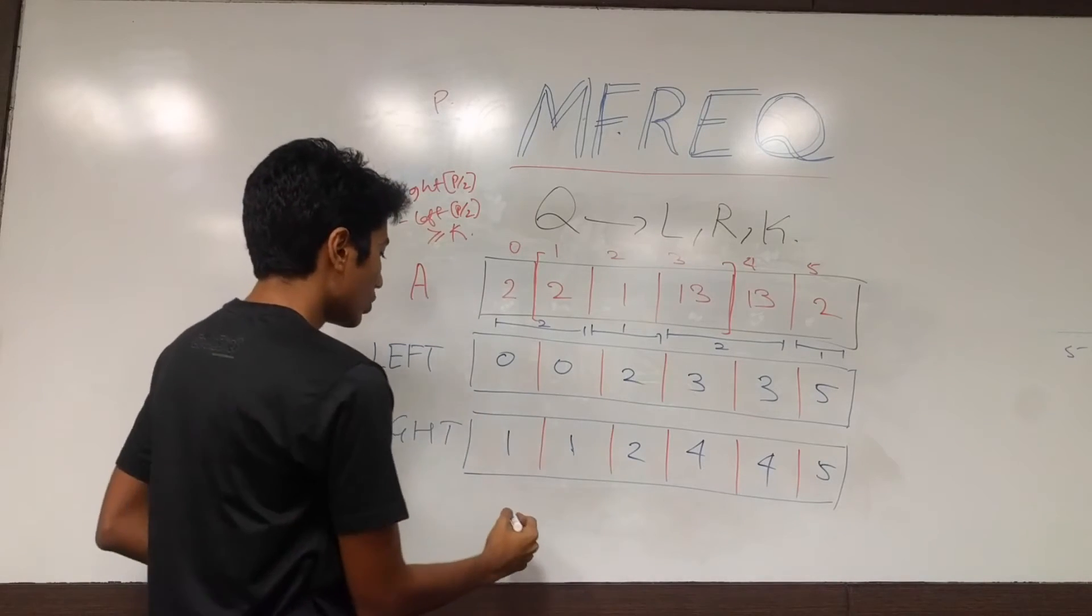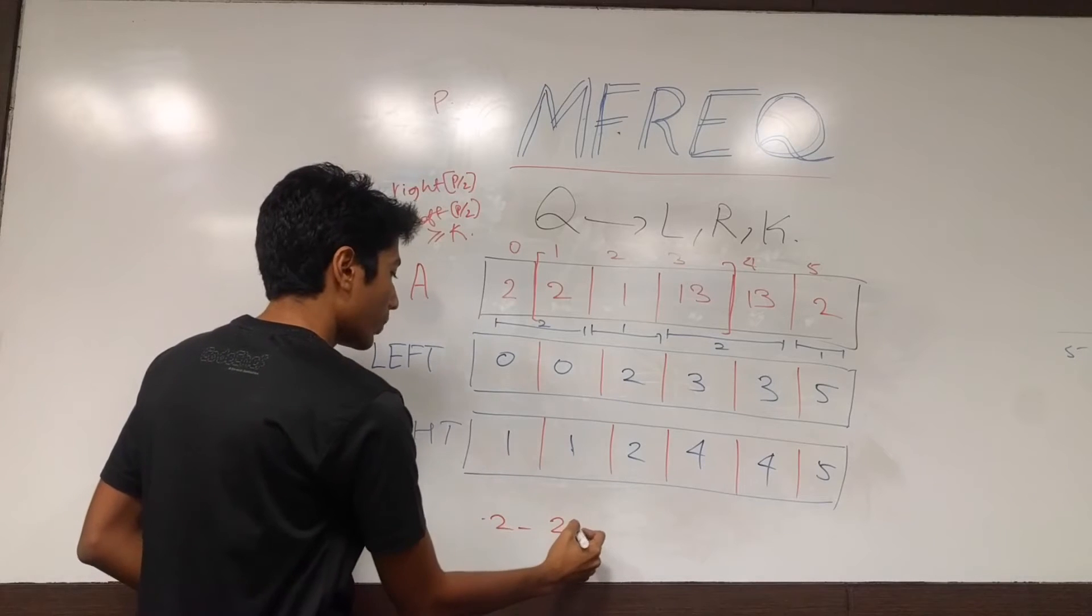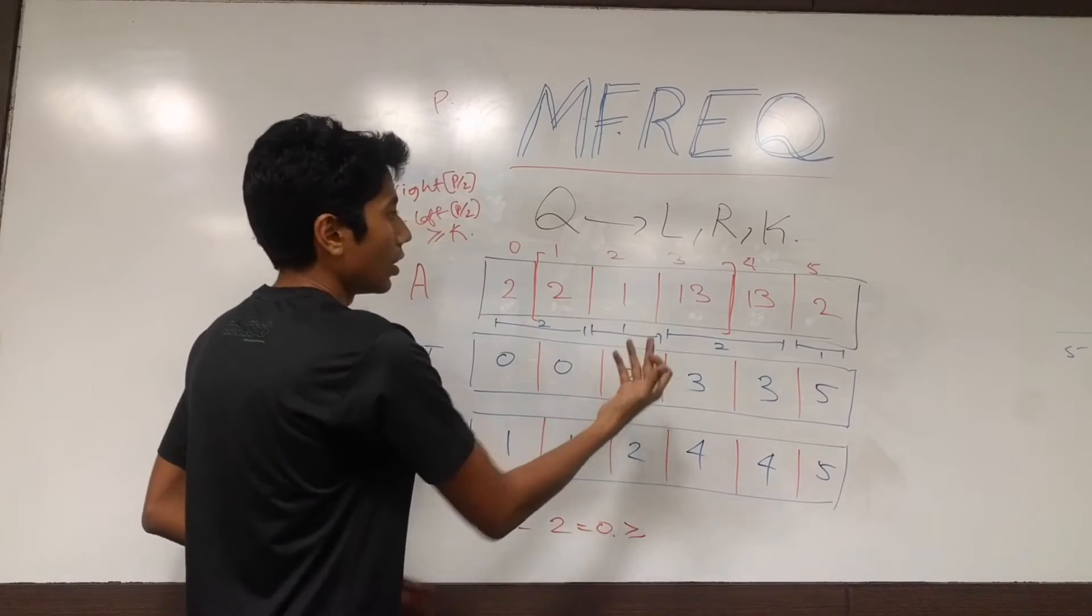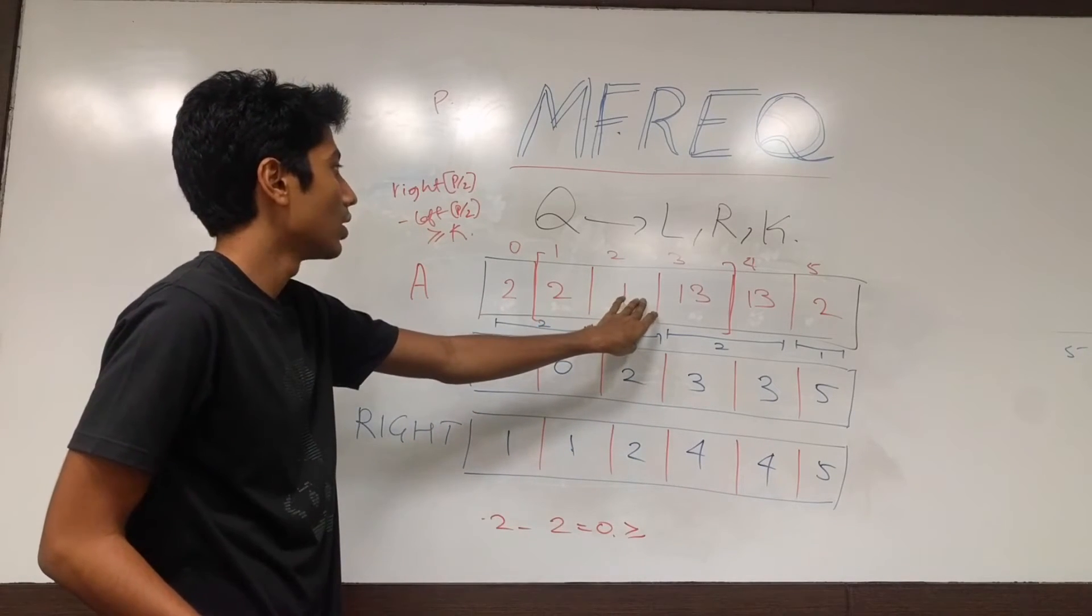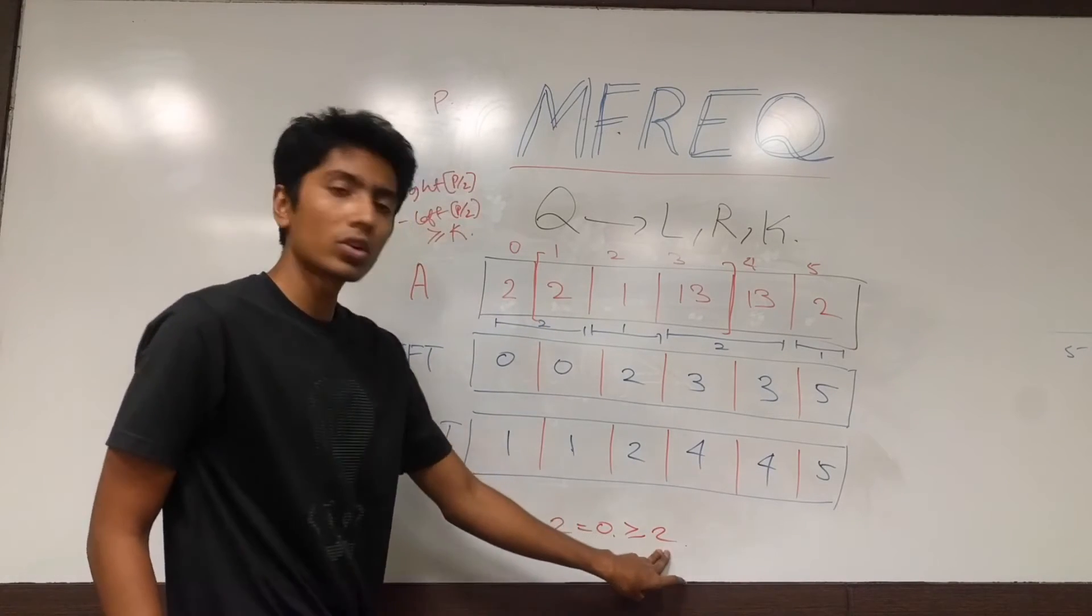Left of 1 is equal to 2. Right of 1 is also equal to 2. 2 minus 2 is equal to 0. Is that greater than or equal to... Let's take a k also. k has to be greater than 50%. So k is equal to 2, let's say. So is 0 greater than or equal to 2? No.